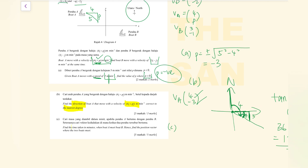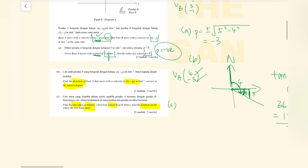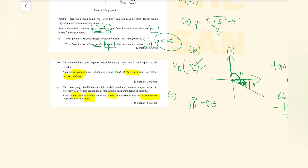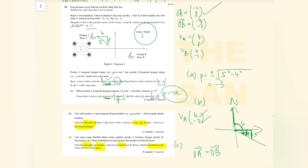Now for question C: find the time taken in minutes when board A meets board B, then find the position vector when they meet. When they meet, they are at the same point, so the position vector of A equals the position vector of B. Note that both boards start moving at the same time, so the position vector of each board keeps changing as they move.